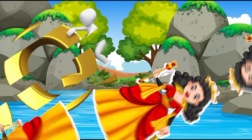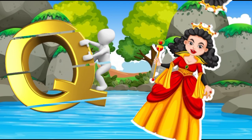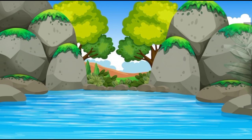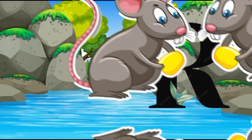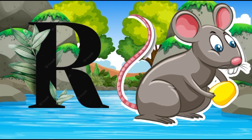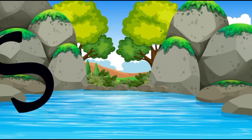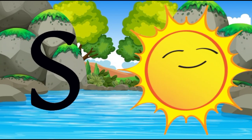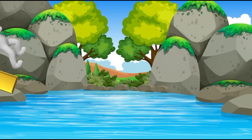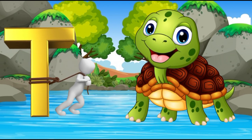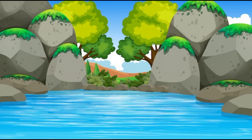Q is for queen, k-k-queen. R is for rabbit, r-r-rabbit. S is for sun, s-s-sun. T is for toad, t-t-toad.